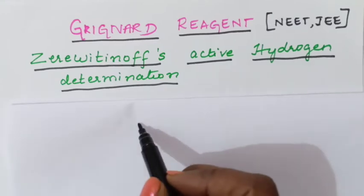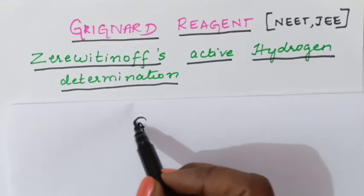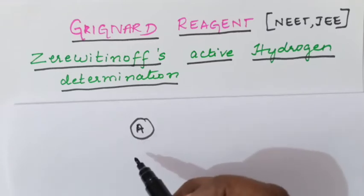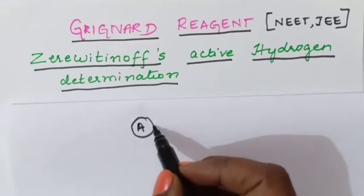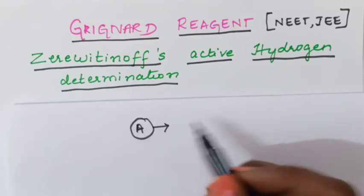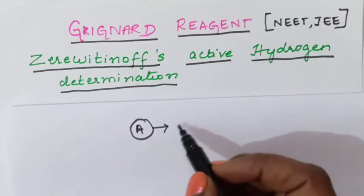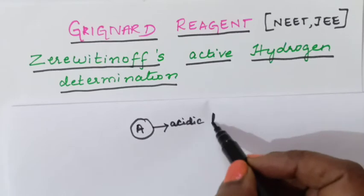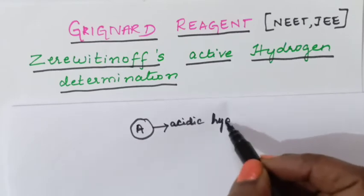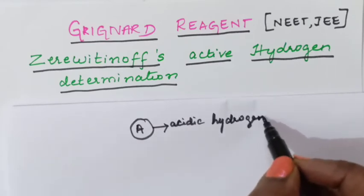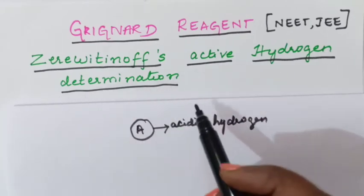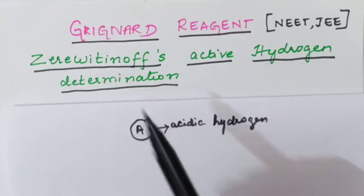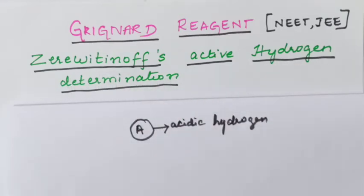Suppose a compound A is given to you, and you should find out the number of acidic hydrogen in it. Active hydrogen is nothing but acidic hydrogen. You can use this method, which is called Zerevitinov's active hydrogen determination method.